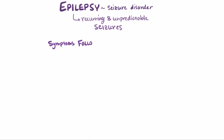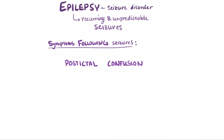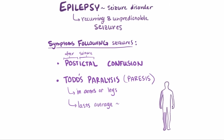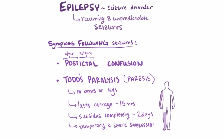Following a seizure, patients sometimes experience certain symptoms like post-ictal confusion, which means after-seizure confusion. Patients might also experience paralysis affecting the arms or legs, usually limited to one side of the body. This is known as Todd's paralysis or Todd's paresis, and can last for quite a while — on average about 15 hours — and usually subsides completely by itself after 2 days. The precise mechanism behind Todd's paralysis isn't well understood, but is thought to be the result of temporary but severe suppression of activity in the area of the brain affected by the seizure.